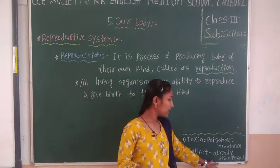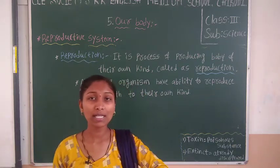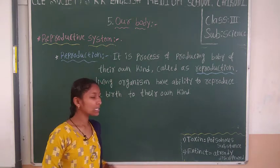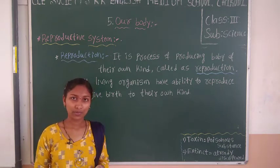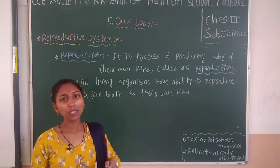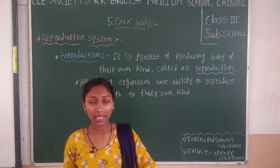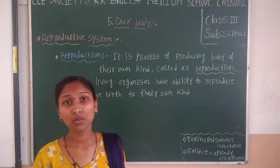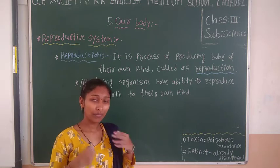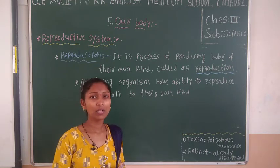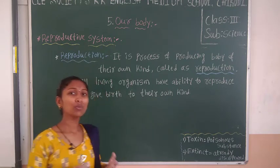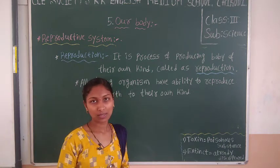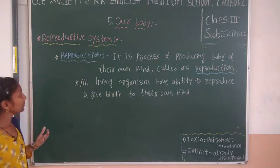Extinct means those animals which have already disappeared from our earth. So to prevent extinction, we have to reproduce. Not only in human beings, but in animals also — domestic animals and other animals — we have to save them. If we save them then they will survive beautifully. We have to support our nature so that nature will support us. This is about reproduction.